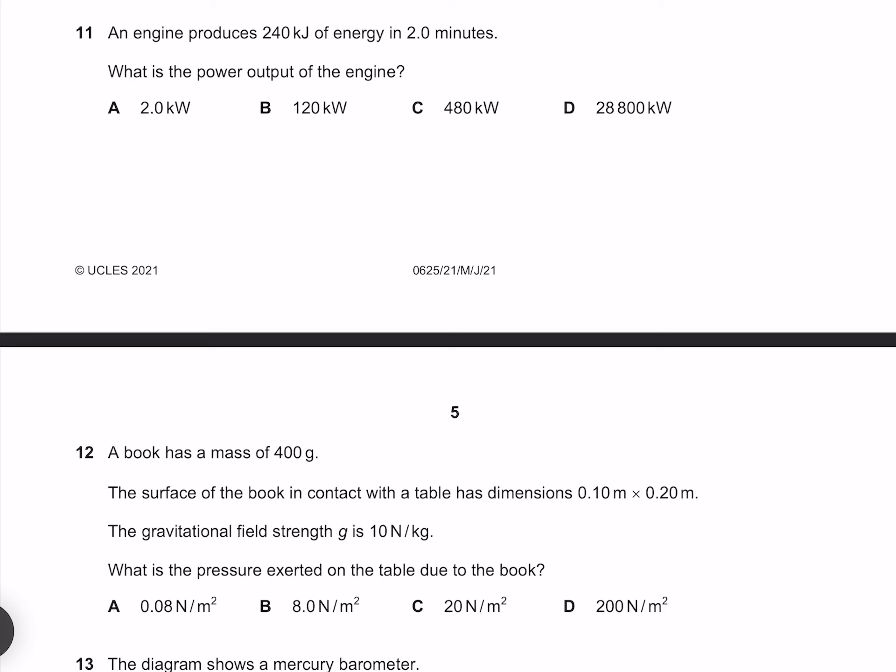An engine produces 240 kilojoules of energy in 2 minutes. What is the power output of the engine? Power is our work over time, where our work is at 240 kilojoules, and our time is at 2 minutes, which is 120 seconds, which gives me 2 kilowatts. Our answer is therefore A.